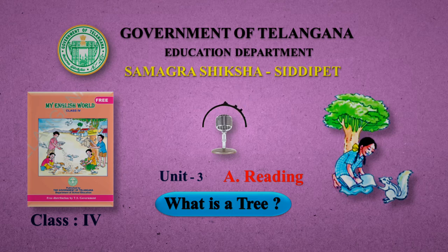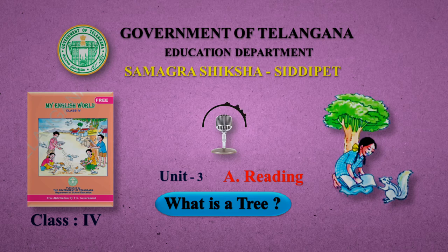Page 35. Amu and Bittu play with their friends for some time. Then they start walking back home. Amu: Now I know what a tree is. Bittu: It is everything for us. Amu: It is our life.